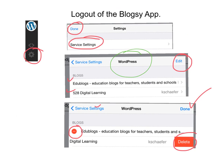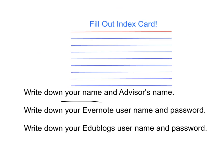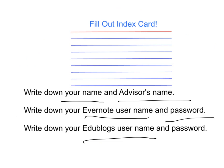You should find an index card, and on that index card you're going to write your name and your advisor's name. Please write down your Evernote username and password — it may be different from your school password, and we would like to have it on hand in case we need it. Also write down your EduBlogs username and password. Your EduBlogs username is usually the year, like 21, your first name, and often your last initial.